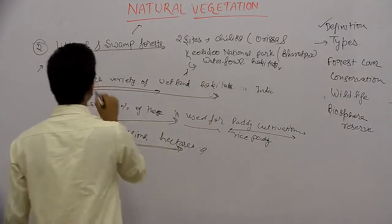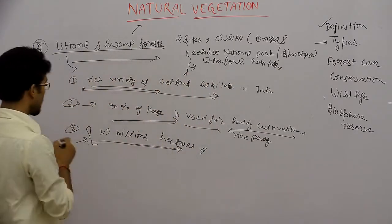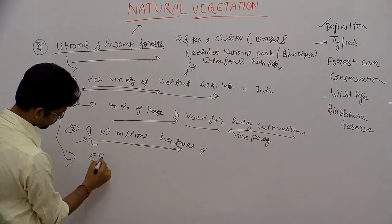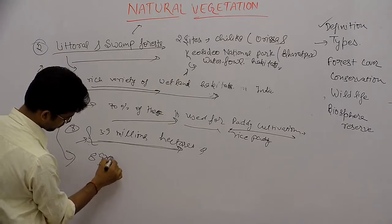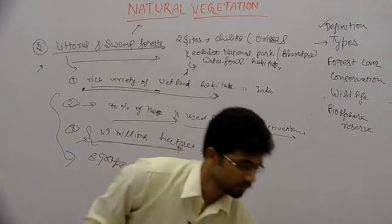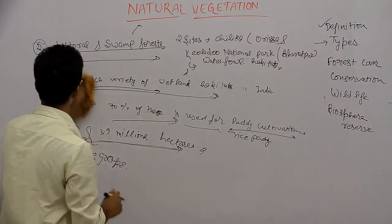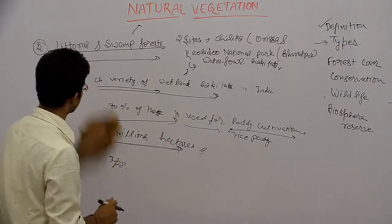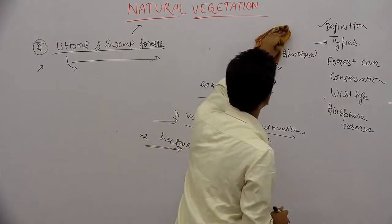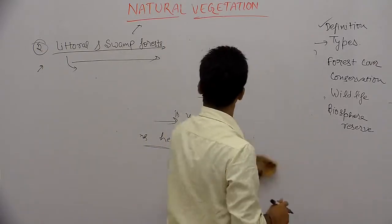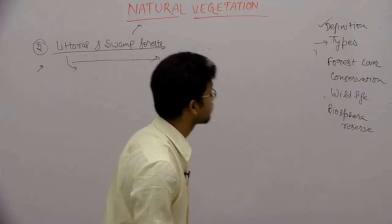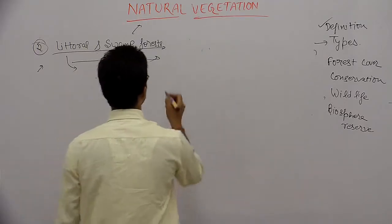Lottel and Swamp Forests are categorized into eight groups.